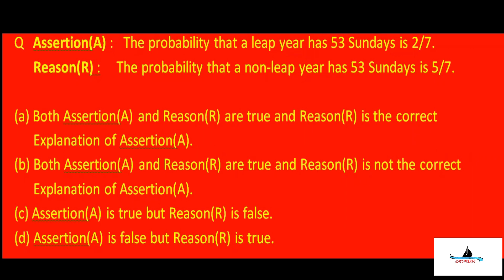Now let us come to the third question — it requires a little more analysis and higher-order thinking. The assertion states: the probability that a leap year has 53 Sundays is two by seven. The reason states: the probability that a non-leap year has 53 Sundays is five by seven. We need to check whether the assertion and reason are true or false.